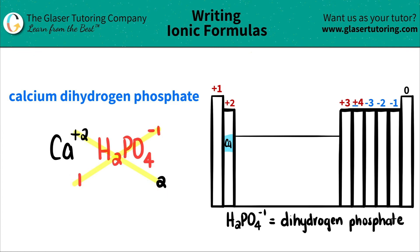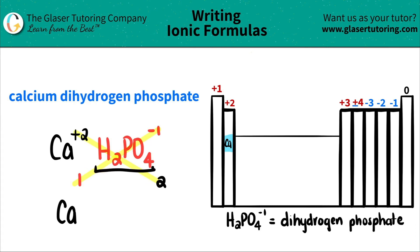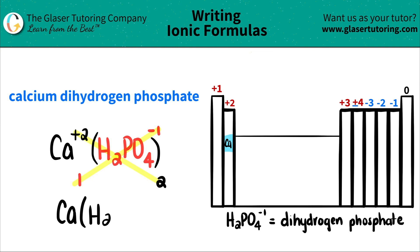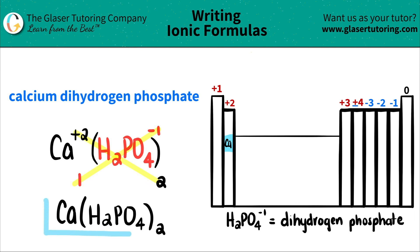So I have calcium, Ca. I only have one of them, so I don't have to write one. But now I have multiple of a polyatomic — in this case, two dihydrogen phosphates. When you have more than one of a polyatomic, you need to show parentheses around the whole polyatomic. So I'll put parentheses and write H2PO4, close parentheses, then put how many I have — two. So calcium dihydrogen phosphate is Ca(H2PO4)2. And that's it.